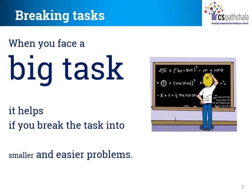For example, you are given 10 questions to solve as homework. In this case, you can start by doing 3 problems after you reach home, take a break, do 3 more problems, take a break again, and then complete the remaining 4 problems. Solving 3 problems at a time is much easier than doing 10 in one go. This is the concept that we will try to understand today using examples.